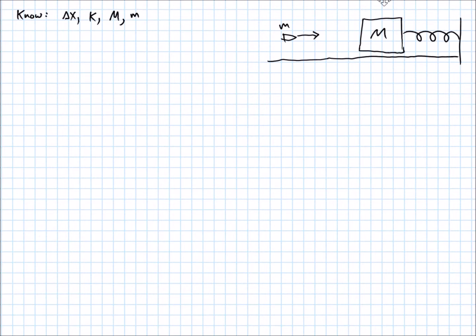And we know how far in the spring gets compressed. The maximum distance the spring is compressed after the little bullet hits the block and causes this thing to move back and compress the spring. So we know that distance.